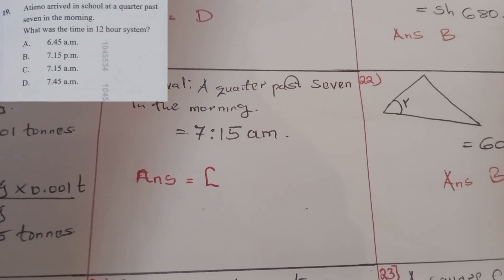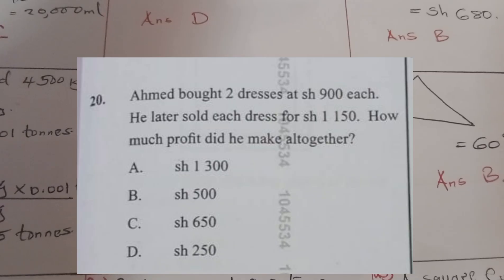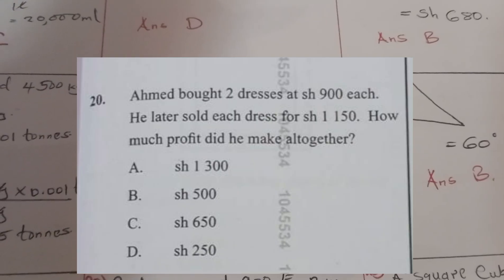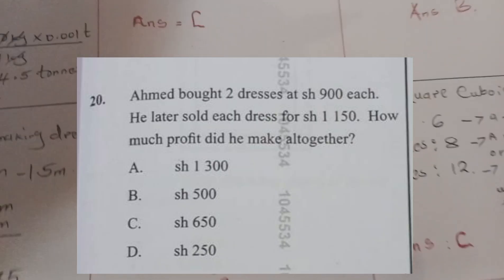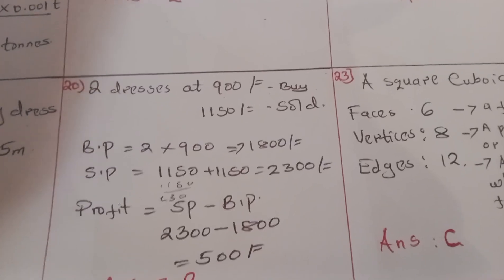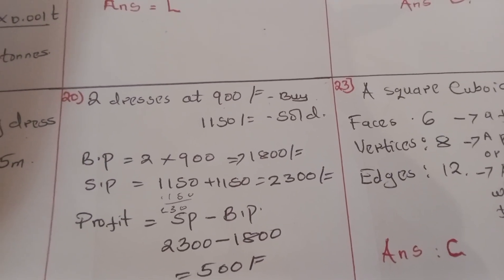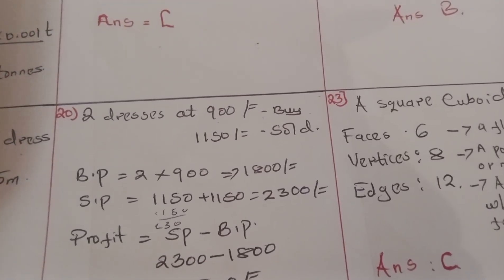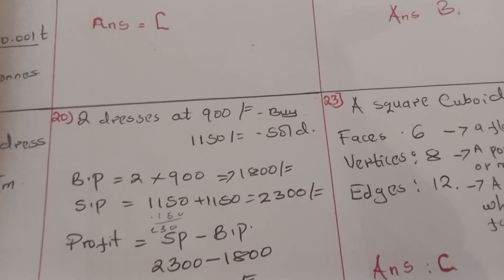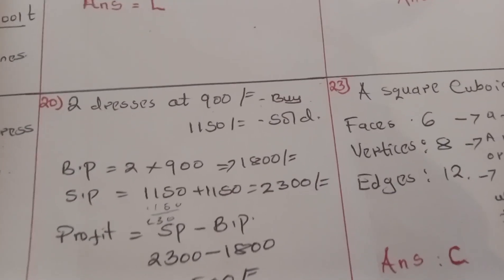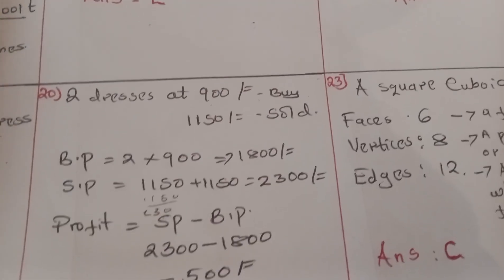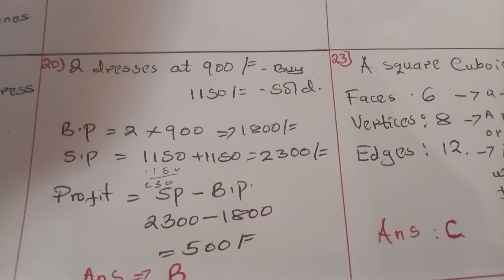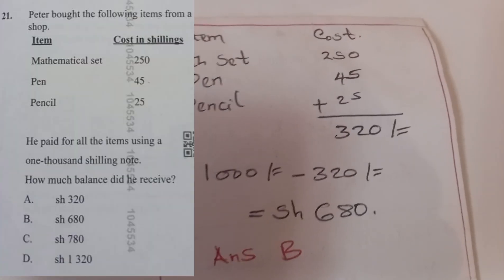Question twenty: Ahmed bought two dresses at 900 shillings each, then sold each dress for 1,150 shillings. How much profit did he make altogether? The buying price is 900 times 2 equals 1,800 shillings. The selling price is 1,150 times 2 equals 2,300 shillings. Profit equals selling price minus buying price: 2,300 minus 1,800 equals 500 shillings. The correct answer was B.